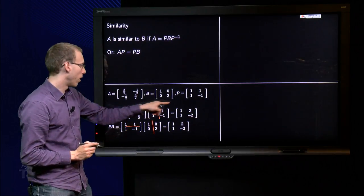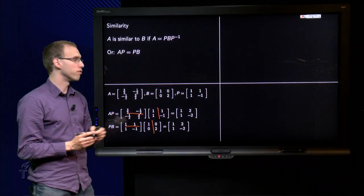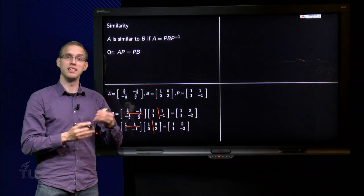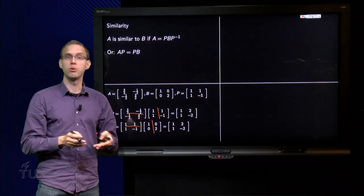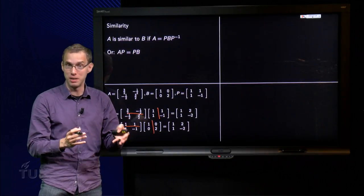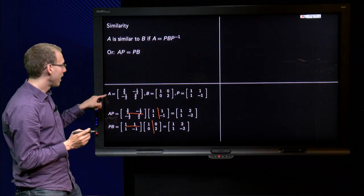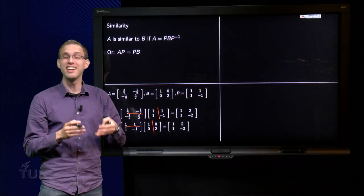And we see, well, A times P equals P times B, the determinant of P equals minus 2, so P is invertible, so that means that in this case A and B are similar. So if you have an A, a B and a P, you can check whether A and B are similar with that particular matrix P. In particular you see, by the way, that A and B are not the same, so similar is not necessarily the same.